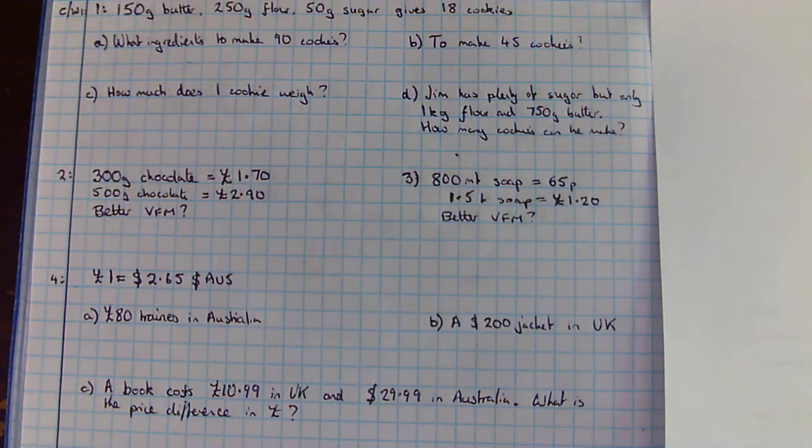Here are some questions for you to try. The first one is looking at a recipe question. The second is value for money, as is the third. And then the last one is an exchange rate question. You shouldn't need a calculator for 1 and 2. Please feel free to use a calculator for 3 and 4.